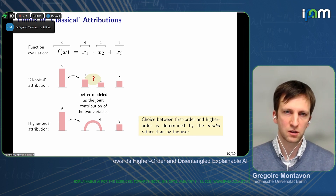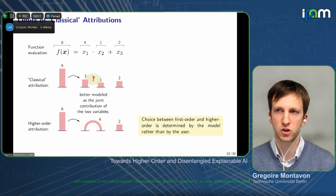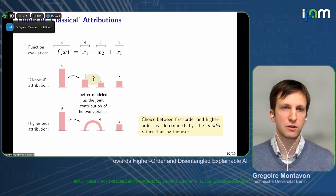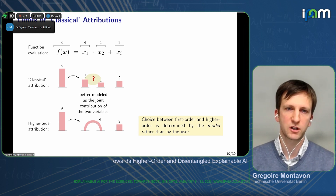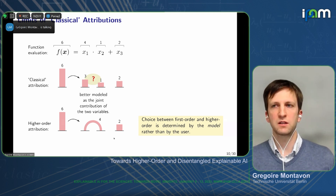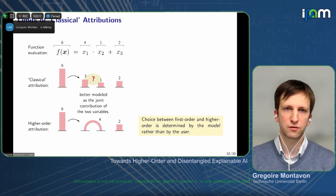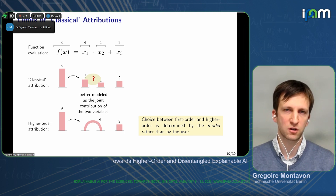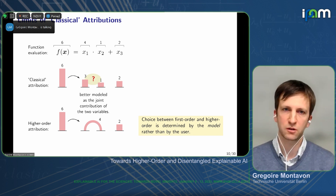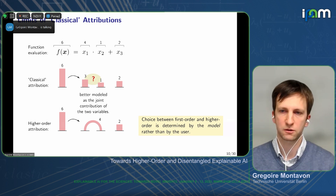Even if we settle this issue, we still might want higher-order attribution, because then we have additional information: the two features do not contribute individually but jointly to the prediction. So instead of histograms, we want to draw arcs between features indicating joint contributions. Also, it's not always the user who decides whether to use first-order or higher-order attribution — it's more determined by the model. If we have a linear function, there's not much point to higher-order attribution, but if there are feature interactions then it makes sense.